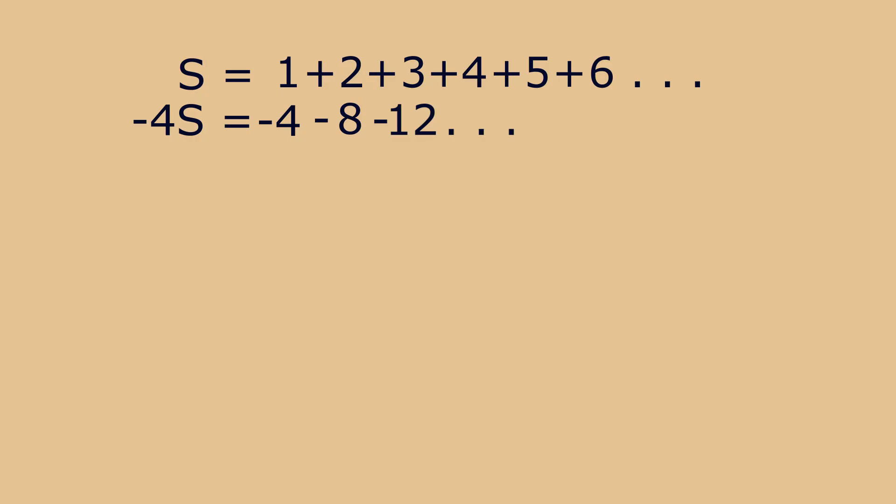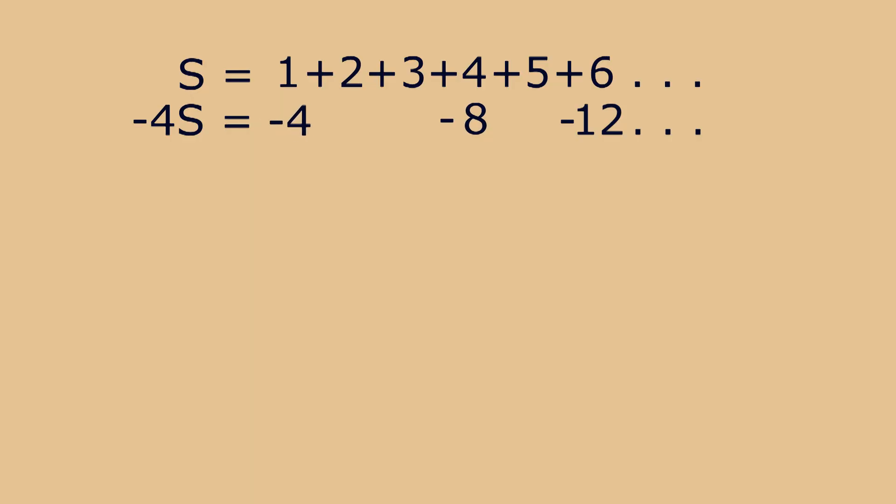Now you'll notice Sal that I've only written the first three numbers because I'm going to slide the minus 12 to the right so that it's underneath the plus 6. I'm going to slide the minus 8 to the right so that it's under the plus 4. And I'm going to slide the minus 4 to the right so that it's under the plus 2. Now I draw a line underneath and I add the two equations.